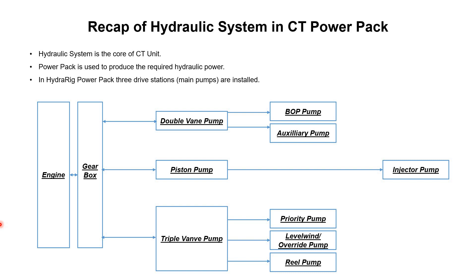In our previous tutorial we discussed that the hydraulic system is the core of coil tubing unit, and it is the power pack which is used to produce the required hydraulic power. In the hydraulic power pack, three drive stations — three main pumps — are installed: the double vane pump, piston pump, and triple vane pump. The double vane pump provides power to two circuits: the BOP circuit and auxiliary circuit.